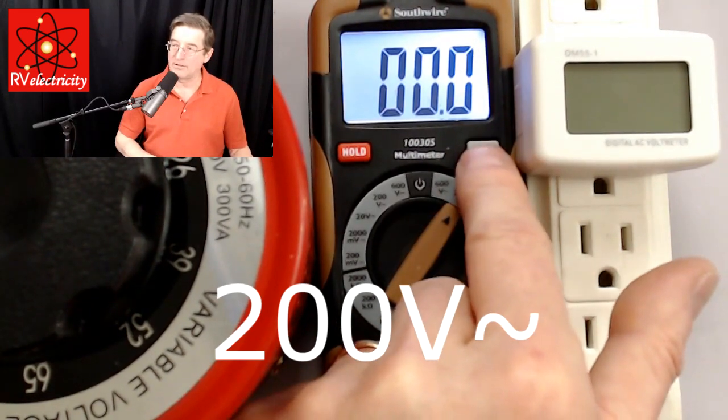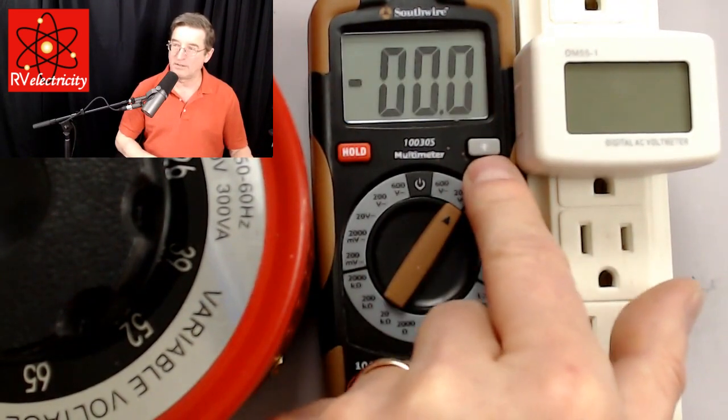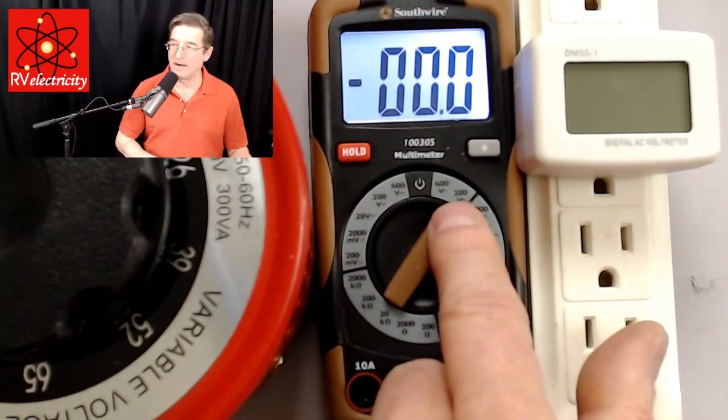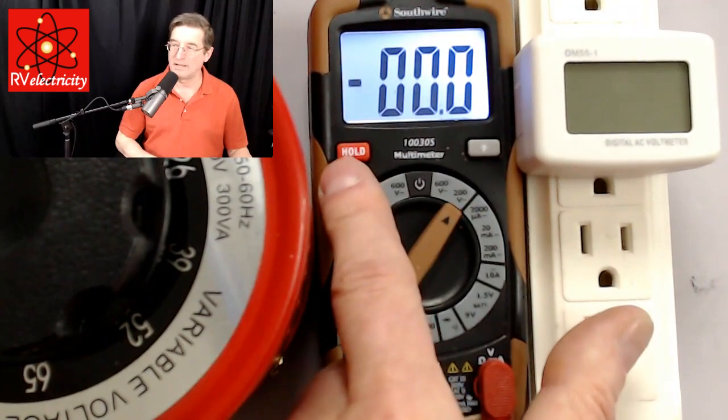Right now I have the backlight turned on but we could turn it off if we wanted to conserve the batteries. I generally like it on for dimly lit areas. We'll describe what this hold button does momentarily.